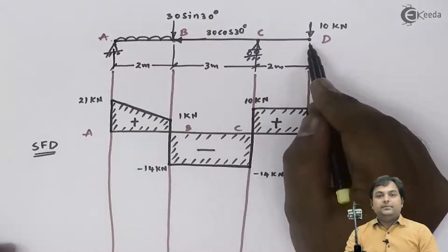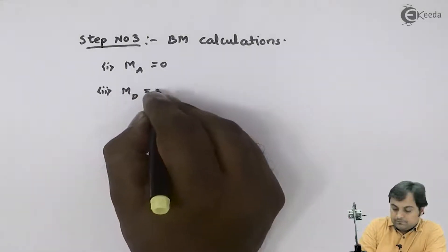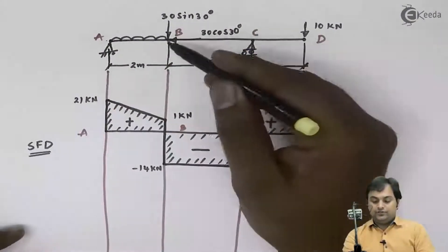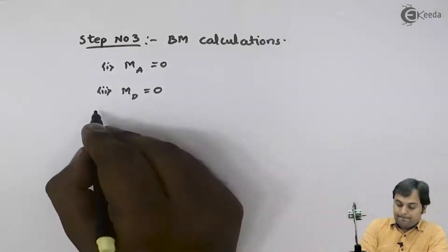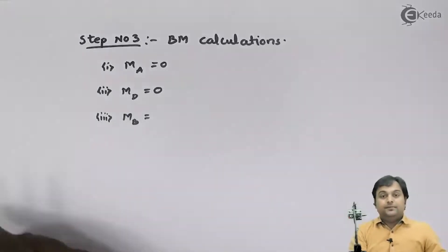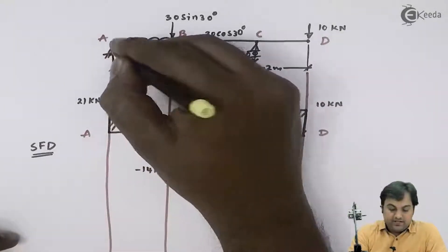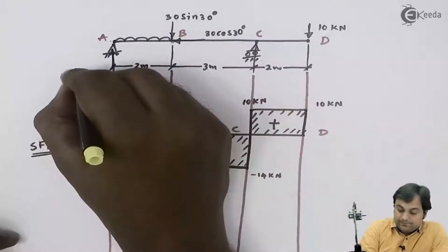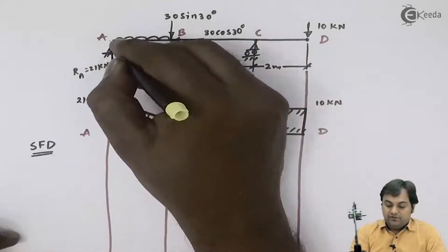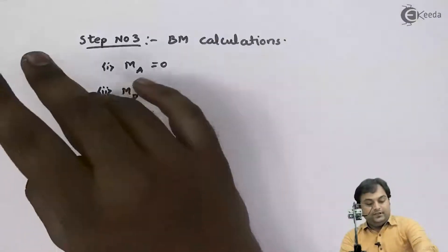At point D the bending moment is zero. Next I need to calculate bending moment at point B and at point C. At point B, I will be getting reaction at A in the upward direction. RA value was 21 kilonewton, so if I take the moment of RA about point B it will be in the clockwise direction.